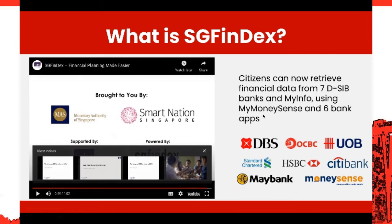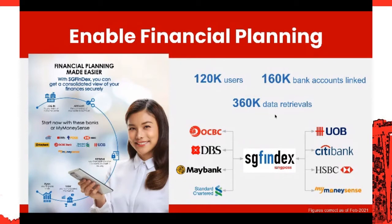I hope now you have a good sense of the role that SGFindex plays, which is to retrieve financial information from participating banks that you have given consent to link up with. Financial planning can then be performed easily and more comprehensively using this consolidated information from seven major banks as well as from MyInfo. Up until the end of February 2021, about three months since the official launch, SGFindex had garnered about 120,000 unique users who linked up approximately 160,000 accounts and performed more than 360,000 retrievals for consolidated viewing. We are expecting the numbers to go even higher when more financial apps are rolled out.